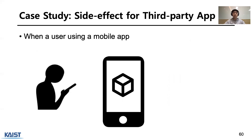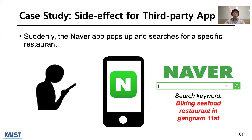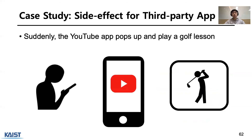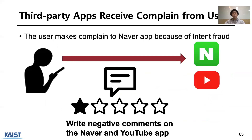I'll explain the side effects of Type 3 fraud. When a user is using a mobile app, the Naver app suddenly pops up and searches for a specific restaurant. From the user's point of view, the Naver app is forcibly displayed in the foreground. This behavior is invoked by the Type 3 fraud app installed on the user's device. We also confirm that Type 3 fraud displays WordPress videos through the YouTube app. This behavior causes users to blame the Naver and YouTube apps through negative comments, so we reported the behavior with the responsible module to Naver and Google.